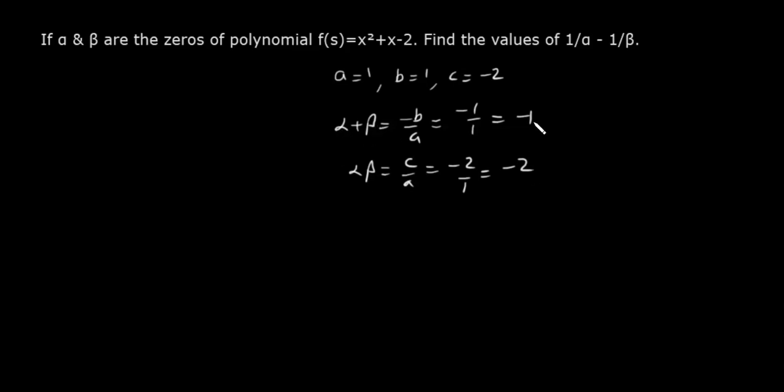To is tarah se sum and product ki values hamein maloom hai. Hum se mangi gayi hai 1 by alpha minus 1 by beta ki value. To yahaan hum LCM lete hain, to beta minus alpha divided by alpha beta aa jaye.